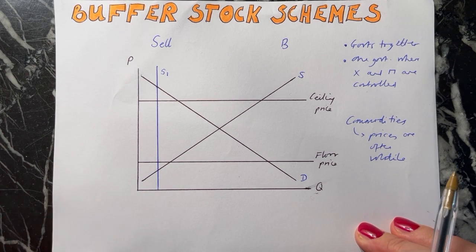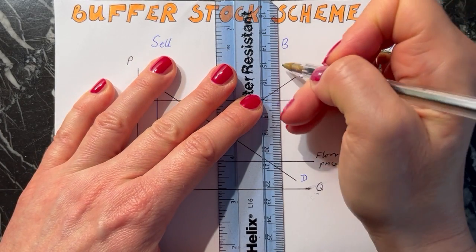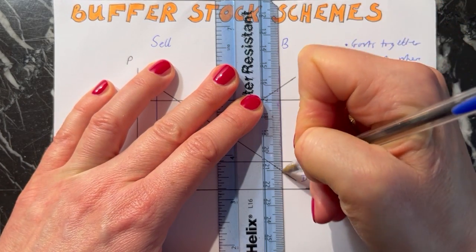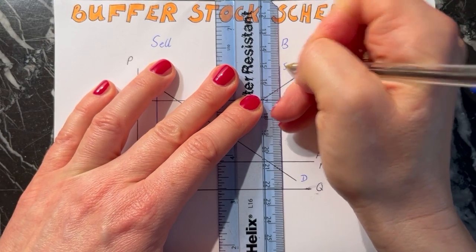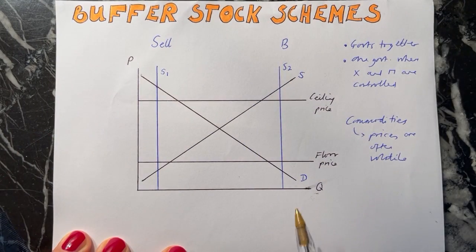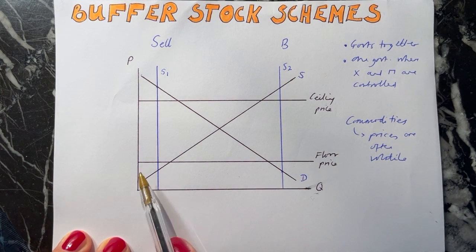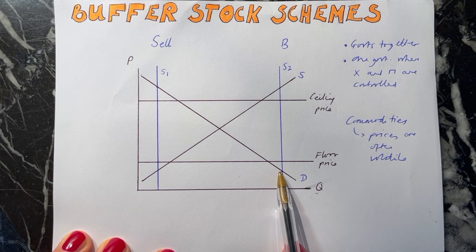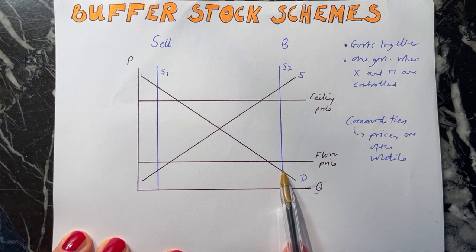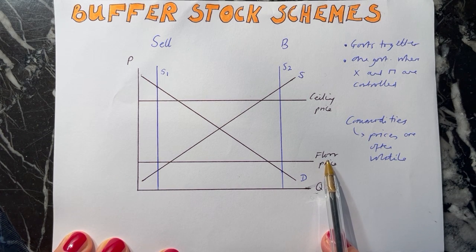On the other hand, you could have a year where you have a very large harvest. Let's say the harvest is all the way over here - we'll call that S2. In this situation you again need to see where your supply is equal to your demand. This time the price is down here - the equilibrium with S2 and D is too low, below the floor - and therefore that's unacceptable.